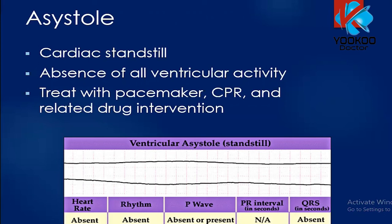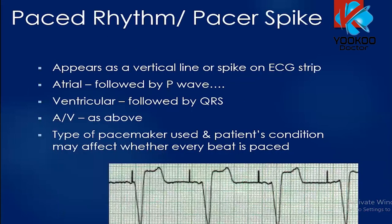Asystole is cardiac standstill — the absence of all ventricular activity — and you see a flat line on the monitor. Be careful: sometimes when the lead is detached from the patient you may also see flat lines, so you need to make sure those flat lines indicate a true emergency requiring CPR. In patients with a pacemaker, you see pacer spikes before either the P wave or the QRS complex.